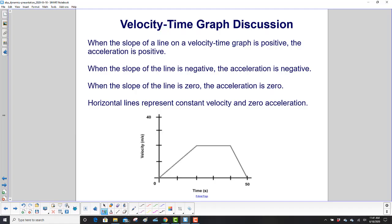When the slope of the line on a velocity-time graph is positive, you have positive acceleration—you're speeding up, velocity is increasing. When the slope is negative, the acceleration is negative—you're slowing down. When the slope is zero, the acceleration is zero. Horizontal lines represent a constant velocity and zero acceleration.